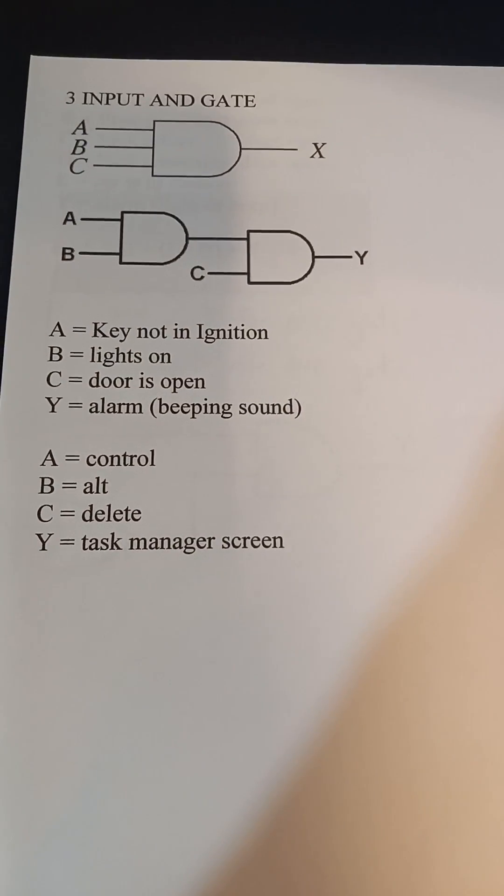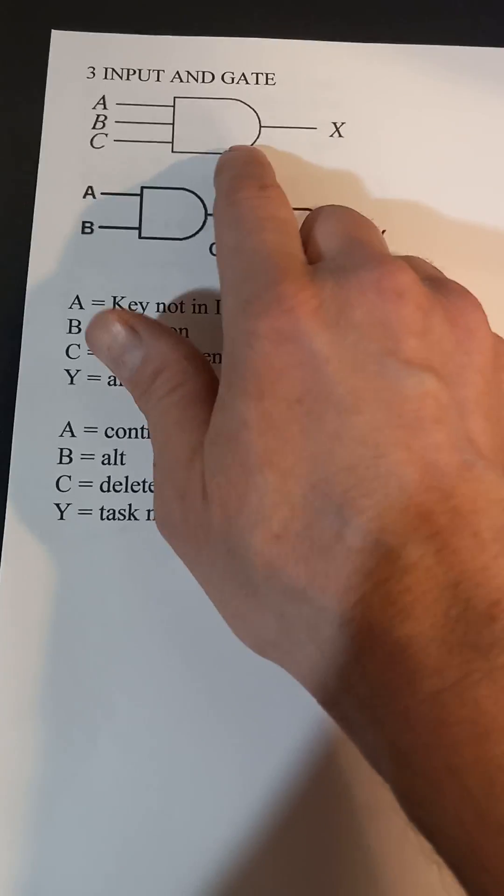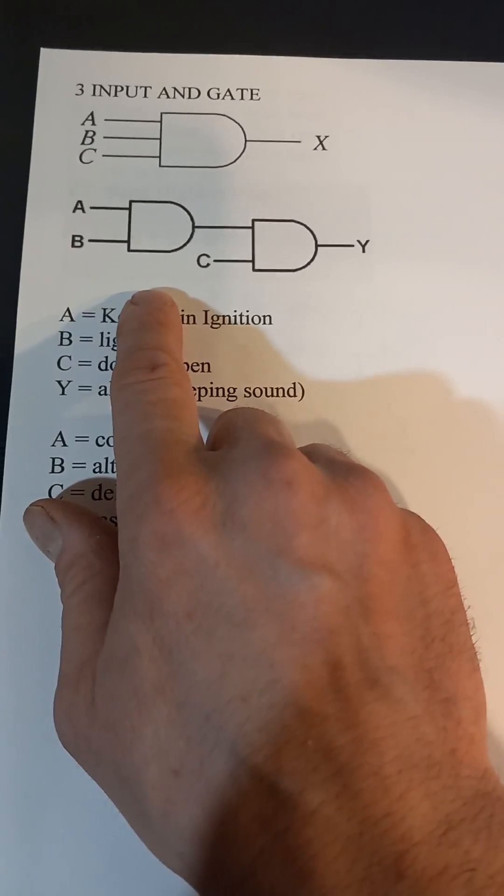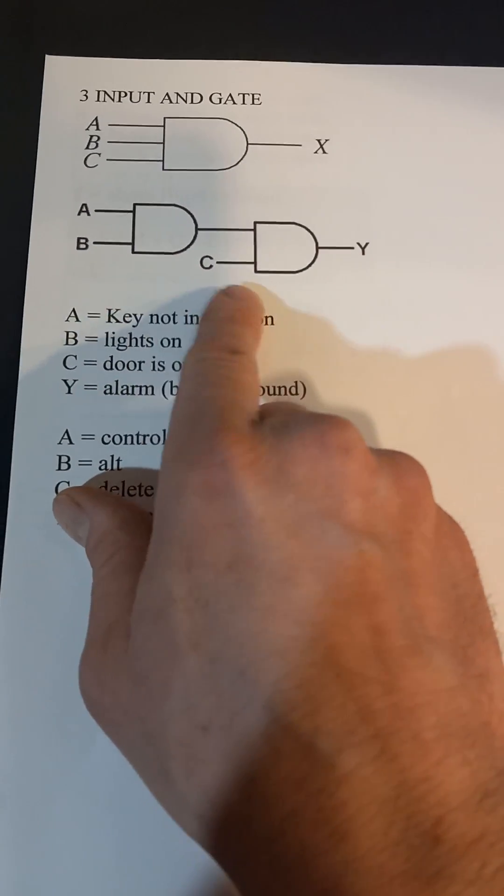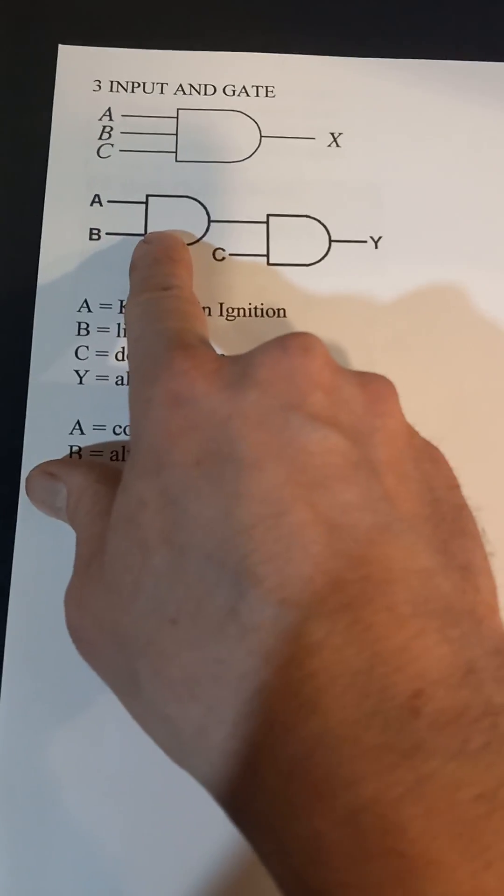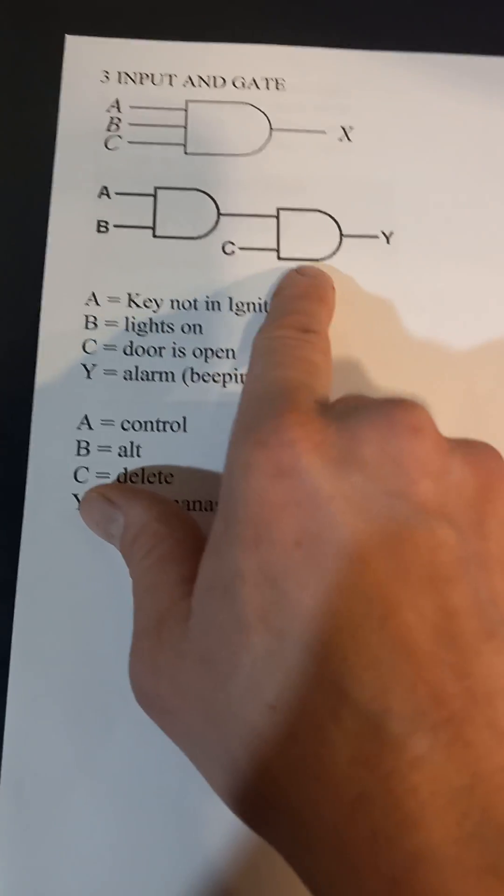Here's a three-input. They do have three input AND gates. If you don't have a three-input AND gate, you can make one using two, like here, two input AND gates. A, B in the first one, then the output of this one goes to your second one and your third input here.